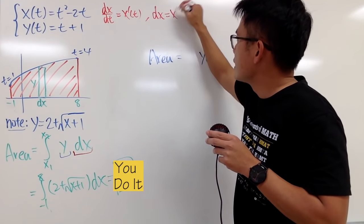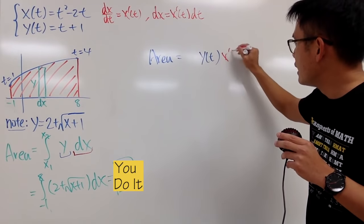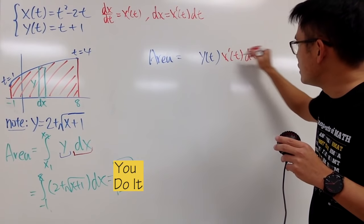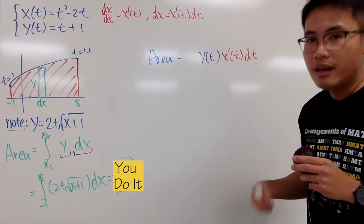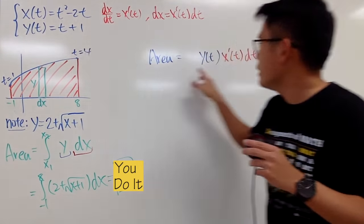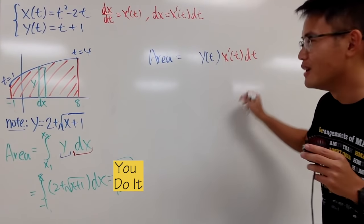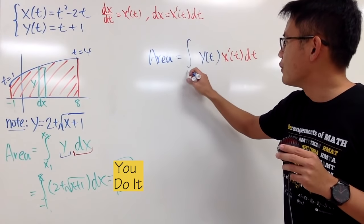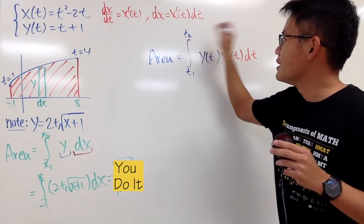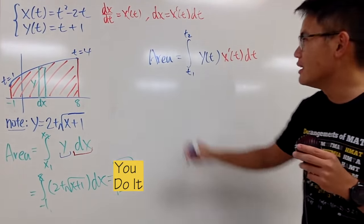And I will just replace the dx with that. And I'll just put this right here. So, I put down x prime of t dt. That's pretty much it. In another word, you just put the y right here. And then, you differentiate this. And then, you put it right here. And then, you multiply by dt in the end. And with that said, you are in the t world. So, we are going to integrate from t1 to t2. And this right here is the formula to find the area when you have parametric equations.